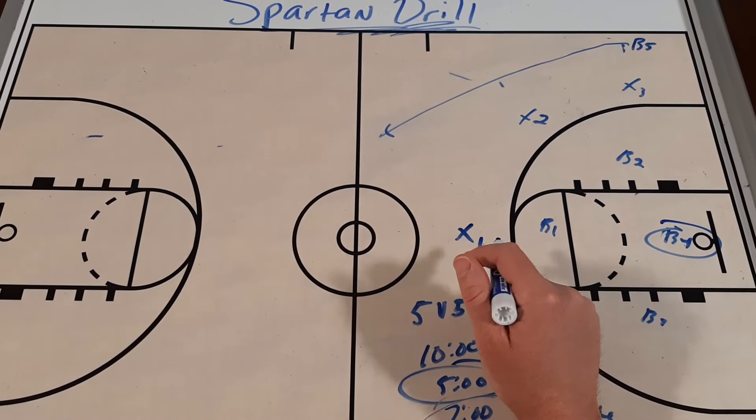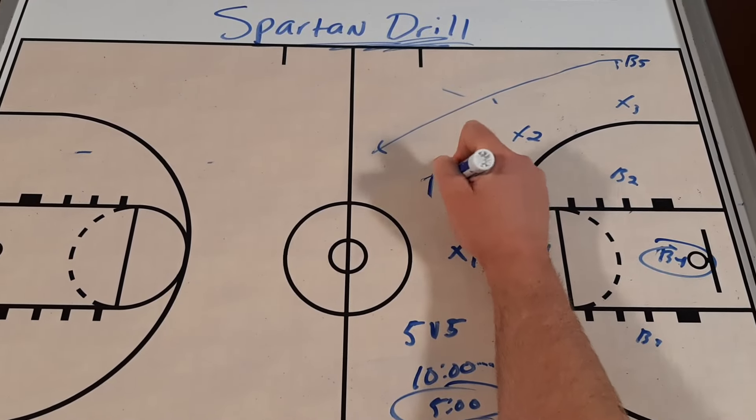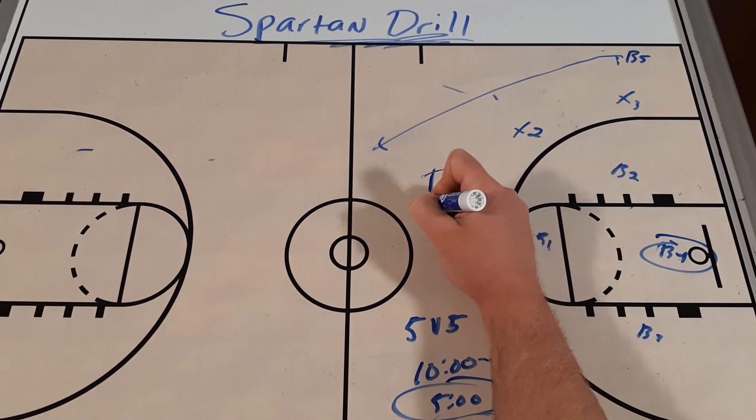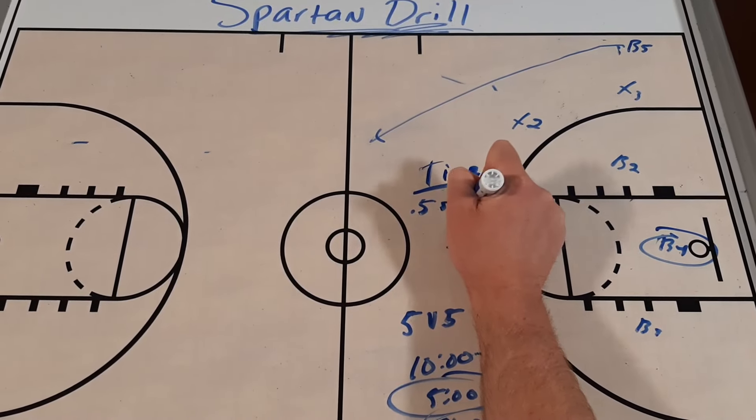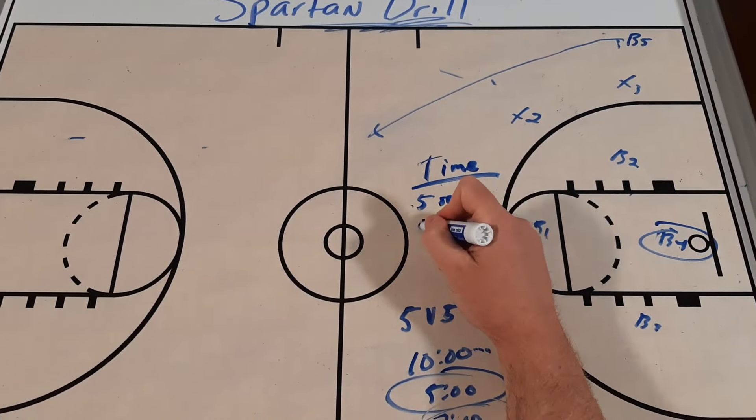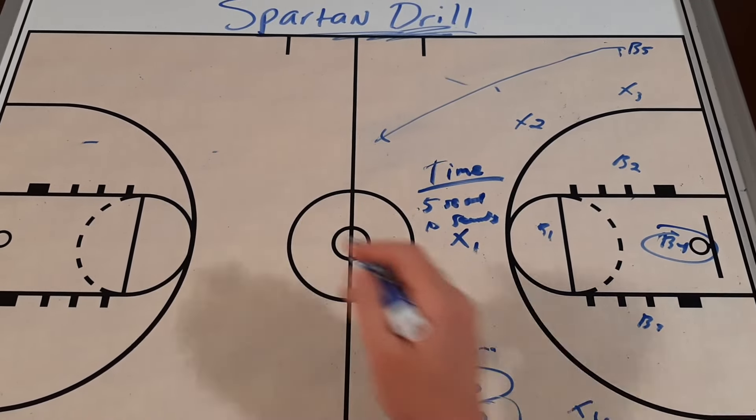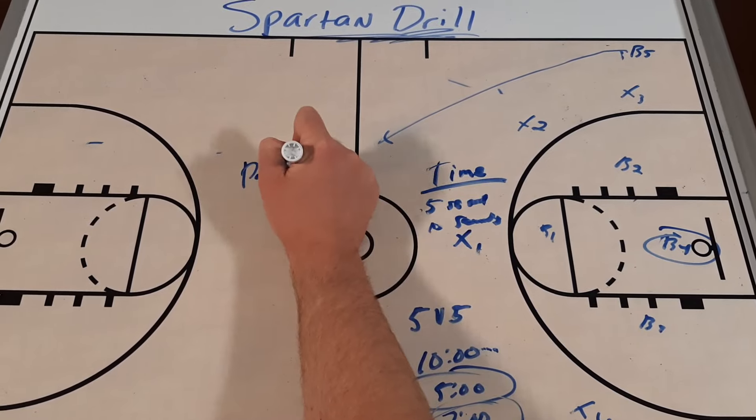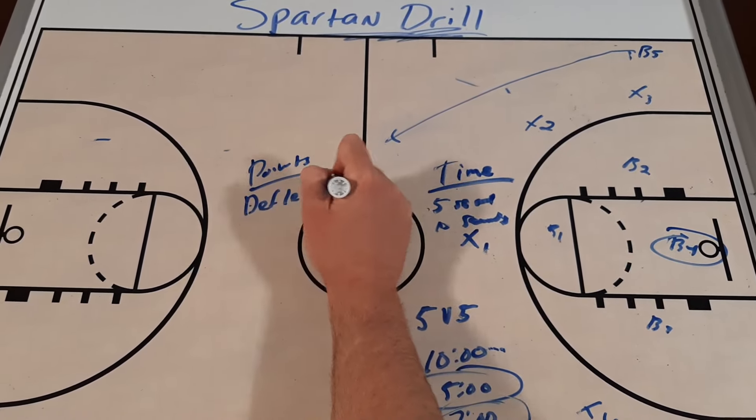So constraints, you could have all kinds of different things you do in terms of constraints. You could have, from a time perspective, like I said, they have to score in 5 seconds or 10 seconds. You could have constraints like that on there. You could give points out.